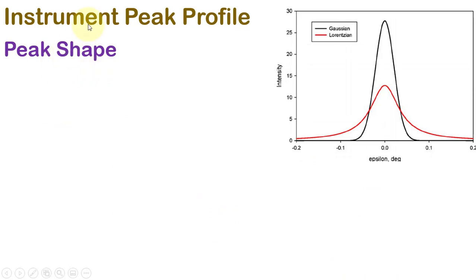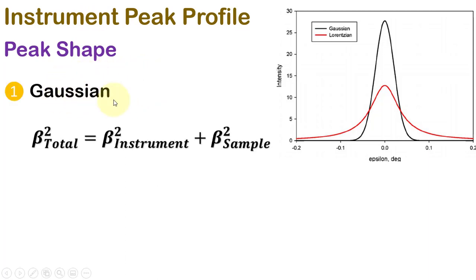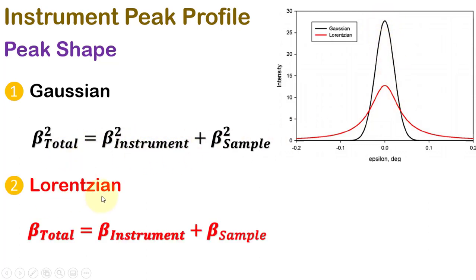In the instrument peak profile, shape of the peak will be taken into consideration for calculating the instrumental broadening. When the standard peak is in Gaussian shape, we will have to use this expression. And when it is in Lorentzian shape, this expression will be utilized.